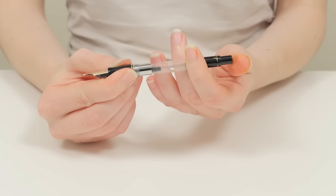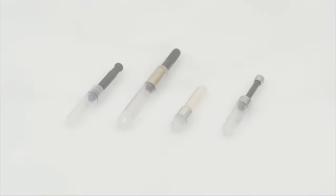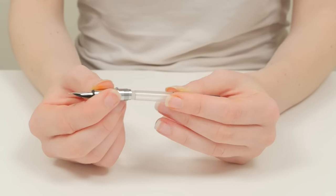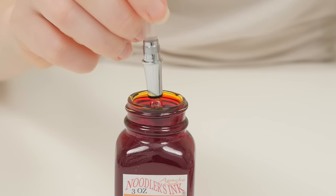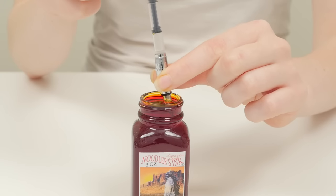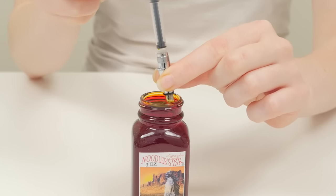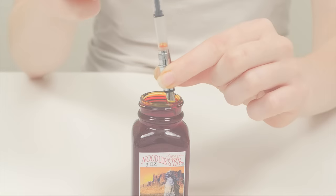If your converter won't draw ink no matter how many times you try, make sure that the converter you're using is compatible with your pen, that it is fully installed into the pen's grip section, and that the nib is fully submerged into the ink. If the converter isn't correctly installed or the nib isn't fully submerged, the converter won't be able to create the suction it needs to draw ink.